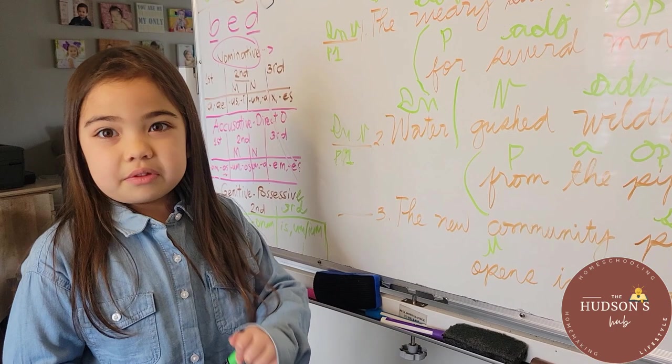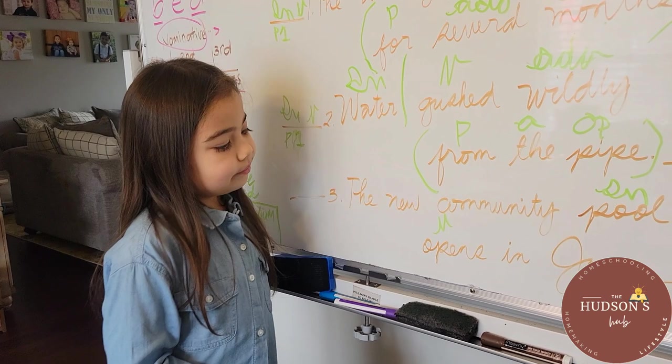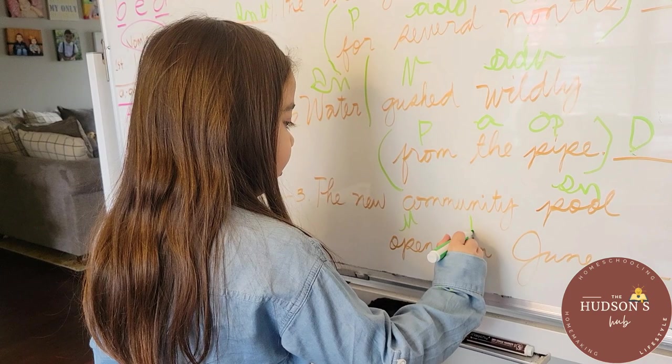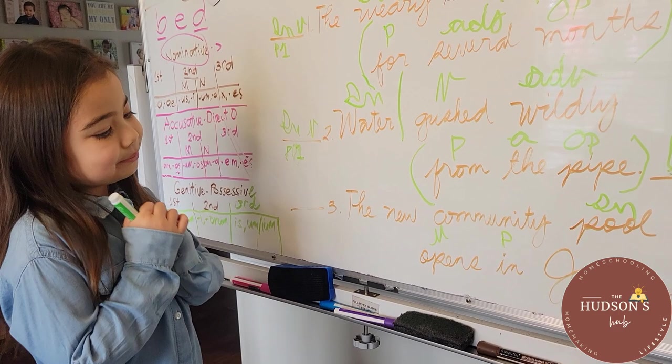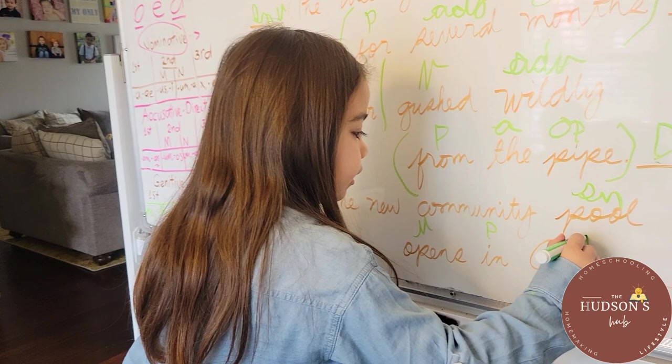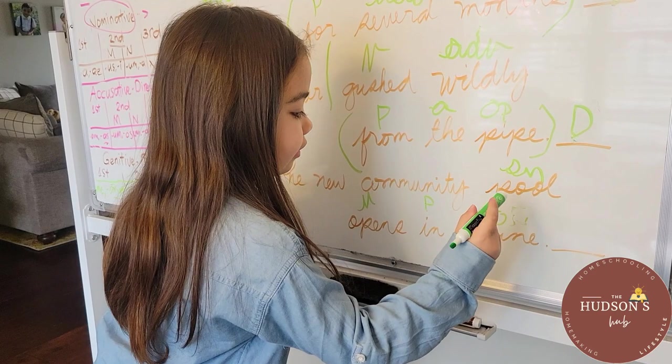The word 'in' is what? A preposition. In is a preposition — good job. P. In what? June. In June — object of the preposition. June is our object of the preposition. Perfect. Good job, OP.